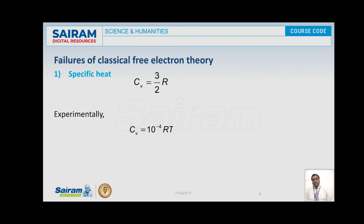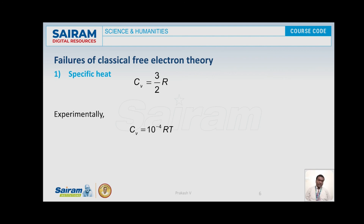Considering specific heat, denoted by CV: specific heat is the quantity of heat required to raise the temperature of one mole of a metal through one degree Kelvin, where one mole is defined as a substance containing an Avogadro number of atoms. As according to classical free electron theory, CV = (3/2)R, where R is the gas constant. But experimentally, it is observed that CV = 10^(−4) × RT, where R is the gas constant and T is the temperature. This discrepancy represents a failure of the theory.